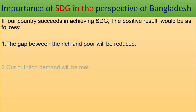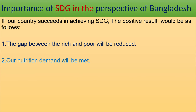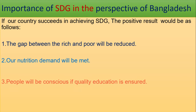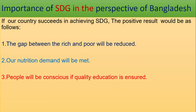Number two: our nutrition demand will be met. If a sustainable agriculture system is implemented, this will result in hardworking and healthy people, and a hunger-free society will work for skilled and competent human resources.